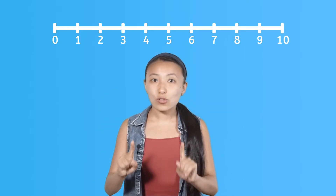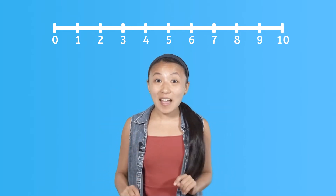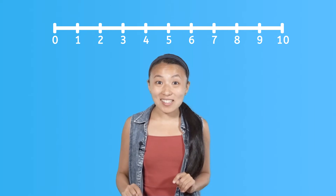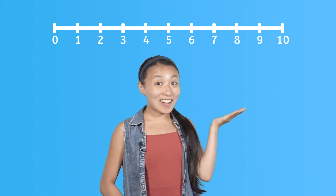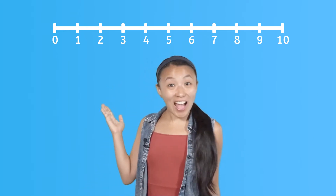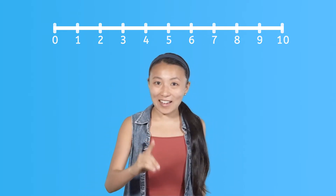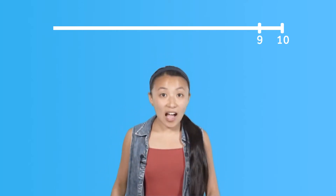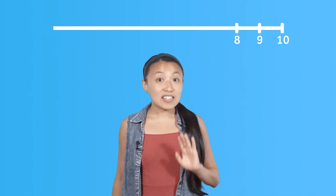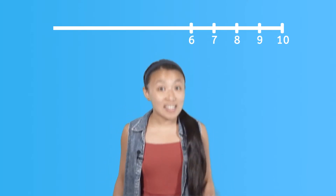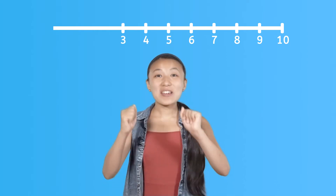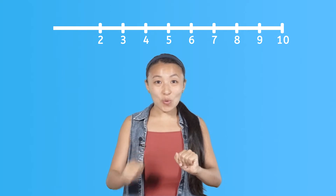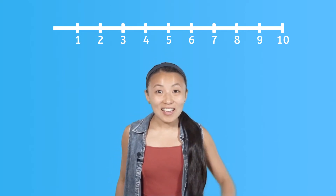We can also use a number line to help us count backwards. This time, let's count from ten all the way down to zero. Ready? Ten, nine, eight, seven, six, five, four, three, two, one, zero.